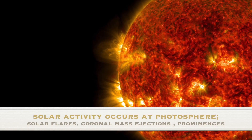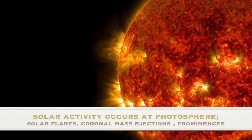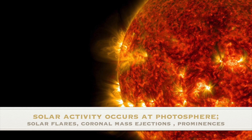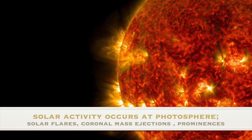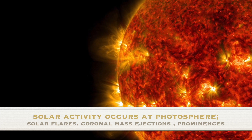Solar activity usually takes place on the photosphere, which includes sunspots and active regions, and on the corona, where solar flares, coronal mass ejections, and solar prominences take place.